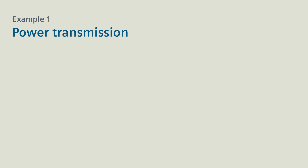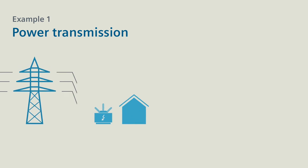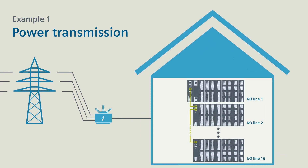Example 1 – Power Transmission. The automation of transformer substations is an essential requirement for this application. Optimally suited for this task is a CP8050 with several I/O lines, which can process up to 2,048 signals.